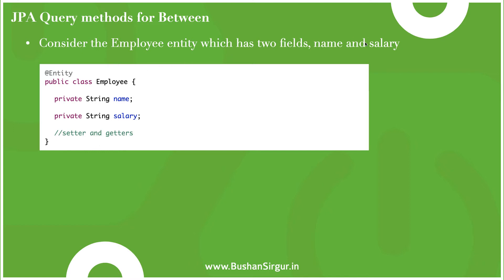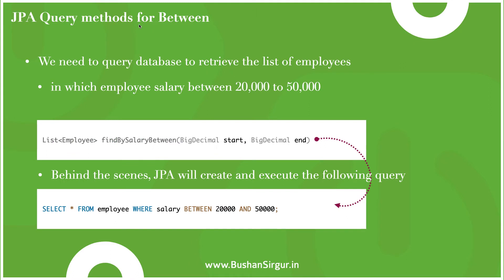Consider an employee entity which has two fields: name and salary. We have the entity class containing those fields along with setters and getters. We need to query the database to retrieve the list of employees whose salary is between 20,000 and 50,000, or any criteria such as between 1 lakh and 2 lakh. In such scenarios, instead of writing SQL queries, we can use finder methods or query methods. The query method is findBySalaryBetween, using the field name followed by the 'between' keyword, taking two parameters: BigDecimal start and BigDecimal end.